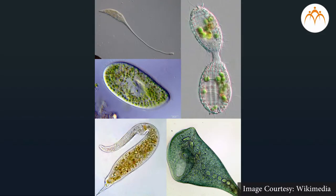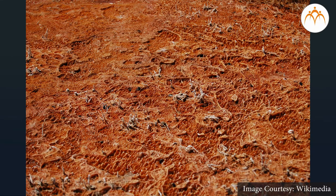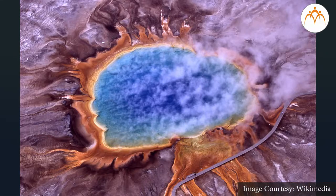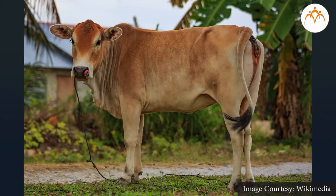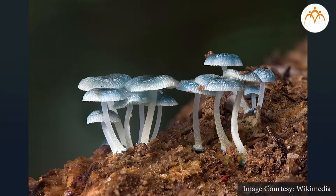Microbes are found in all types of habitat and they affect every aspect of life on earth. They have an amazing variety of shapes and sizes and can exist in a wide range of habitats, from hot springs to Antarctica and inside the bodies of animals and plants.